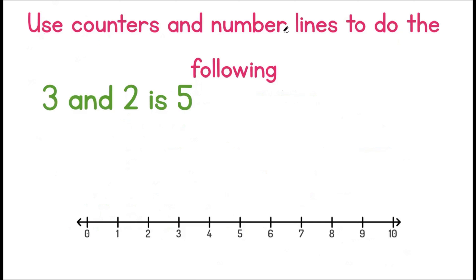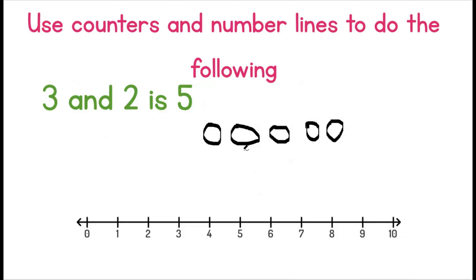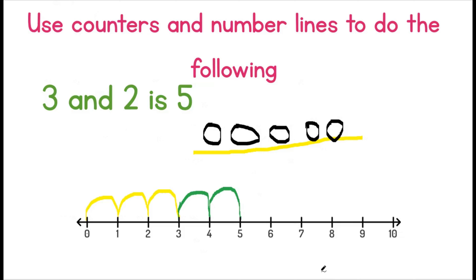Use counters and number lines to do the following. Three and two is five. We count one, two, three, then one, two. This gives us five. Let's draw that on the number line: one, two, three, then one, two. Great job.